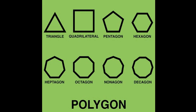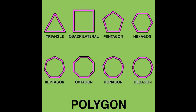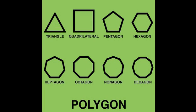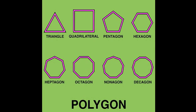A polygon is a shape with lines that connect. The number of sides tells us the name of the shape.